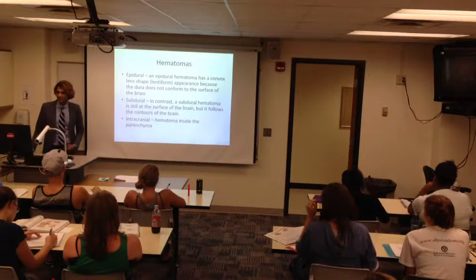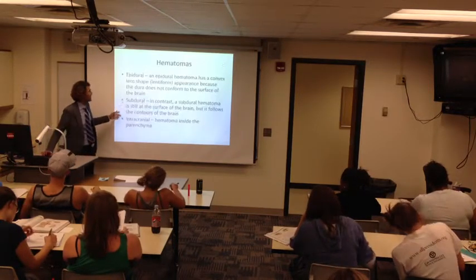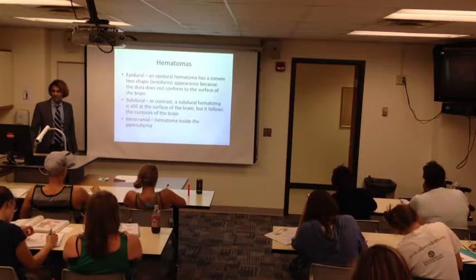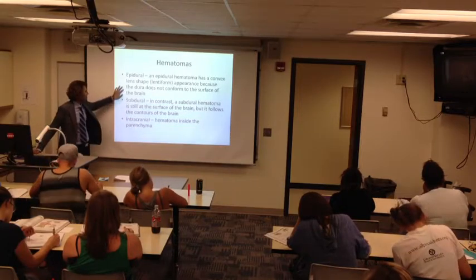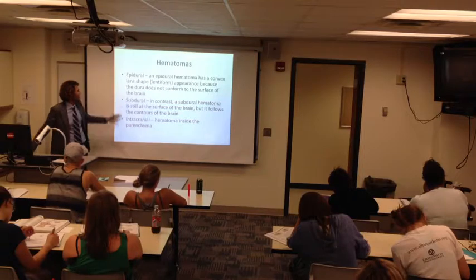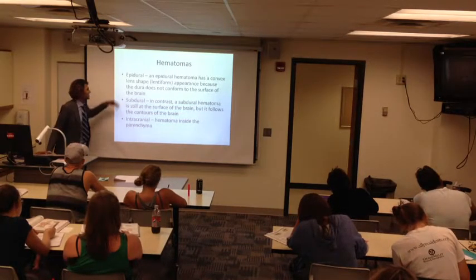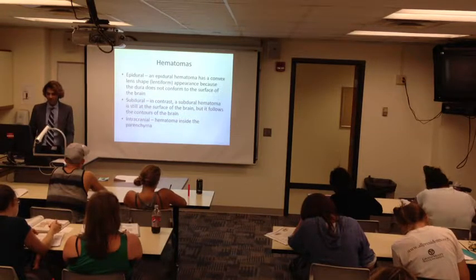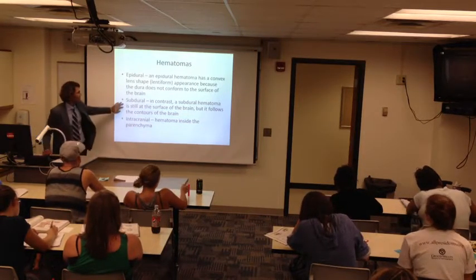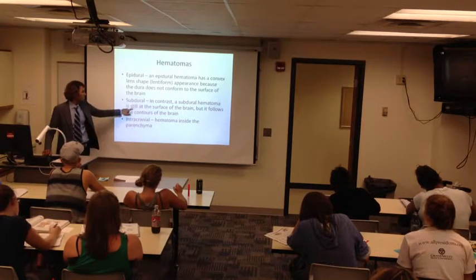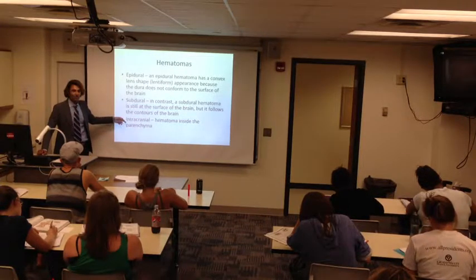Hematomas are another cause of pressure effects inside the brain — too much blood where it doesn't belong. There are several kinds: an epidural hematoma is outside the dura mater, which doesn't conform to the brain's shape, so the hematoma has a convex lens or lentiform shape. A subdural hematoma is underneath the dura mater, so it can conform to the surface of the brain. An intracranial hematoma means the blood hemorrhage is actually inside the brain tissue itself — parenchyma being another word for brain tissue.